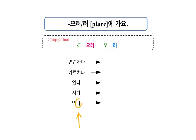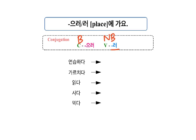These are all action verbs, and dictionary form always ends with 다. Check if there is 받침 before 다 or not. If it ends with a vowel — no 받침 — then you add 러. If it ends with a consonant, which means 받침, then you add 으러.